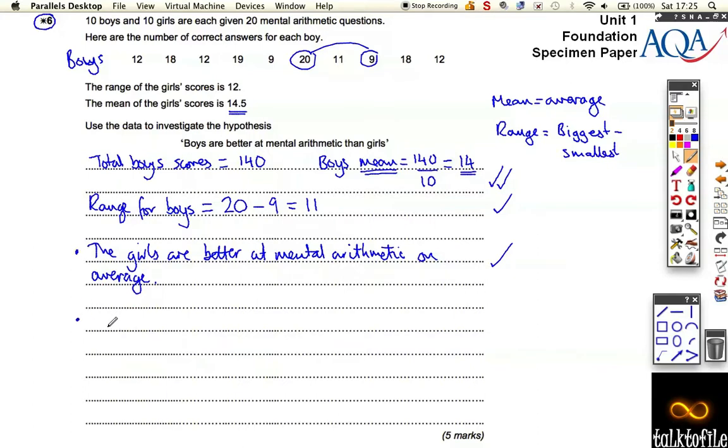For the fifth mark, we need to compare the ranges. We could say something like, however, the girls' results are more spread out, are more varied, as their range is bigger. Their range was 12, compared to the boys' range of 11. 12 is bigger, which means there was a bigger gap. There was only an 11 gap between the boys' best and worst results, but there was a 12 gap for the girls, so they had a bigger change. They might have done better slightly overall, but their results were more varied, and there was a bigger gap between that big and small. That gets you the fifth mark.